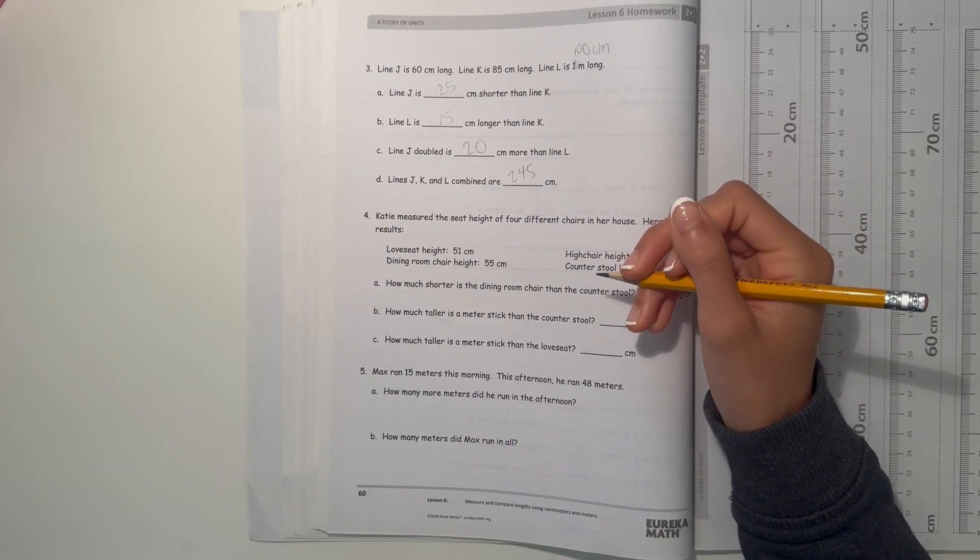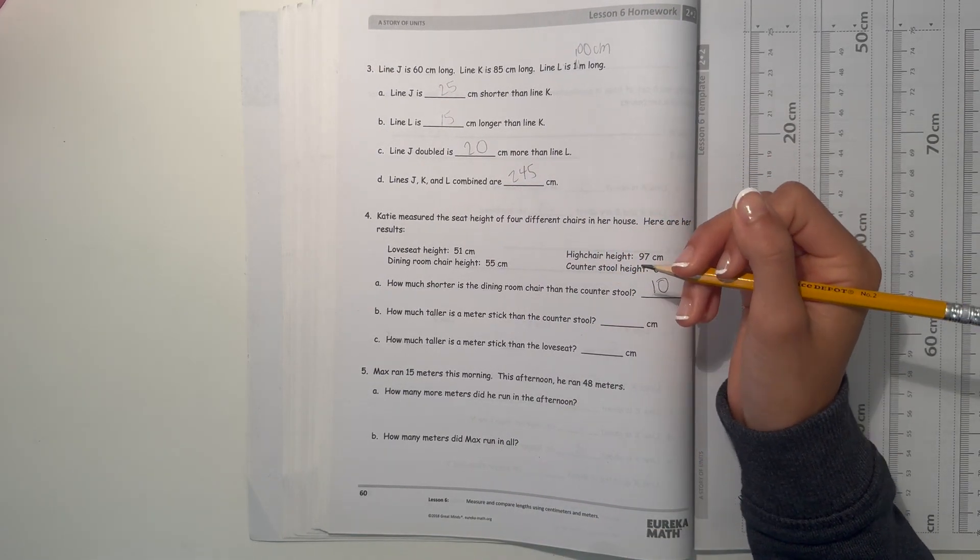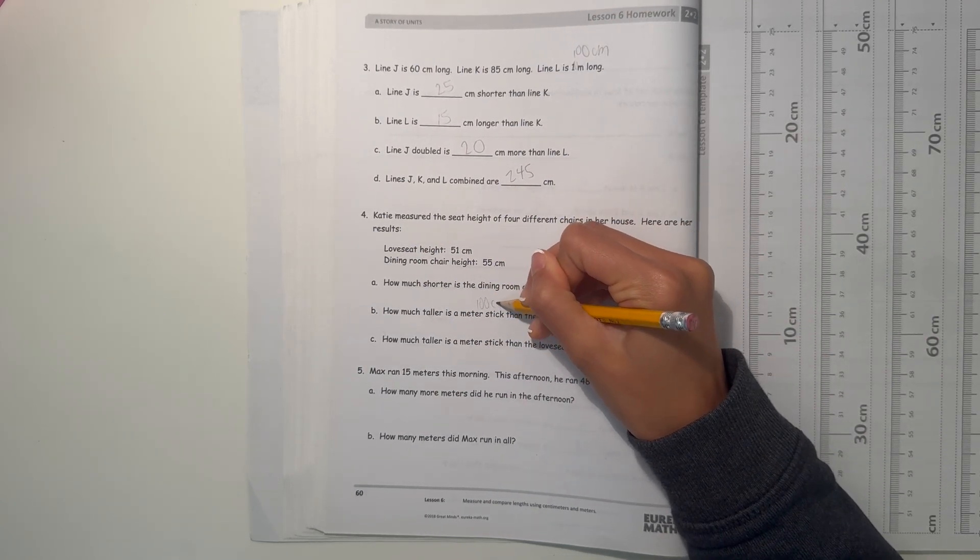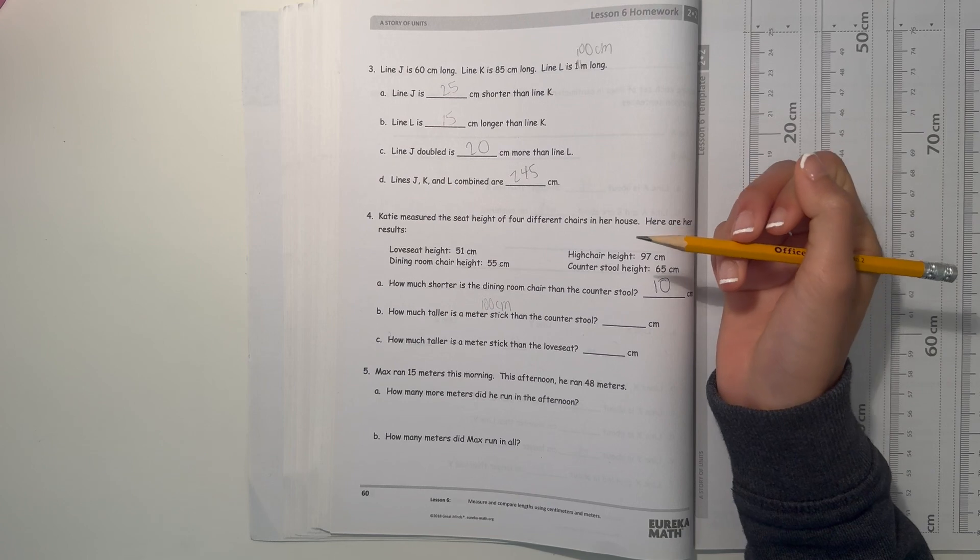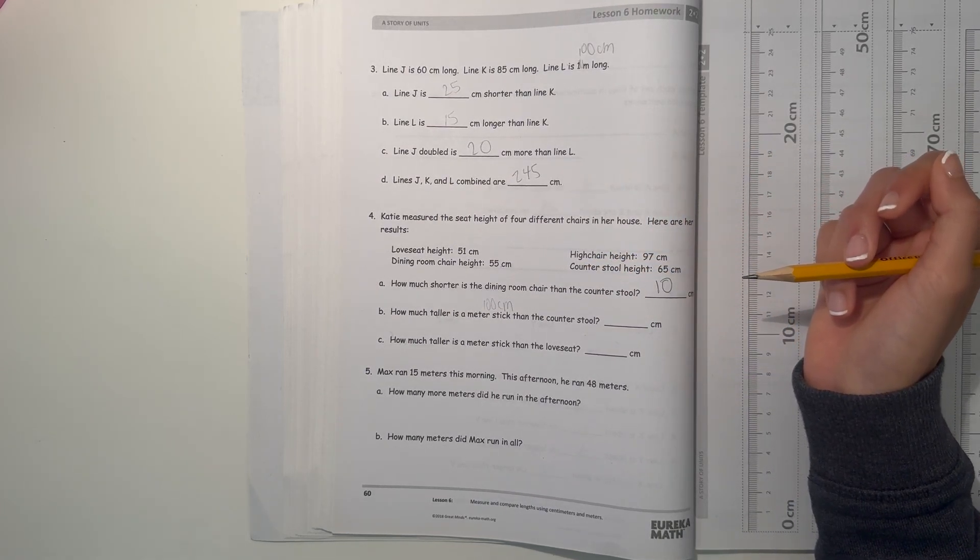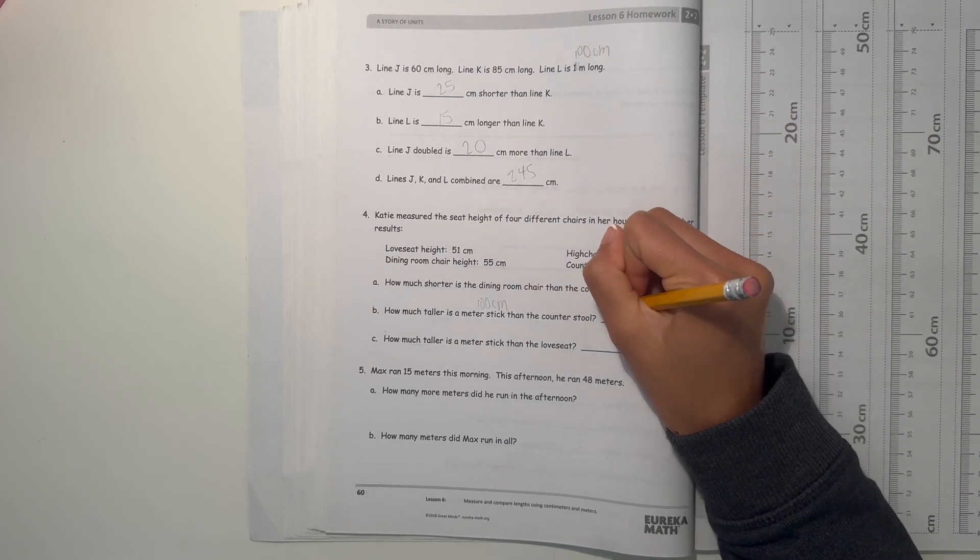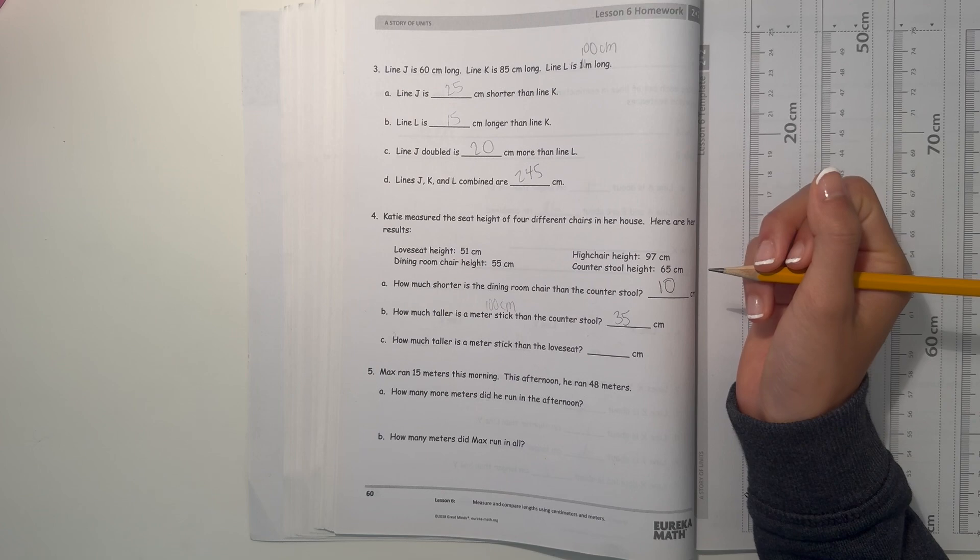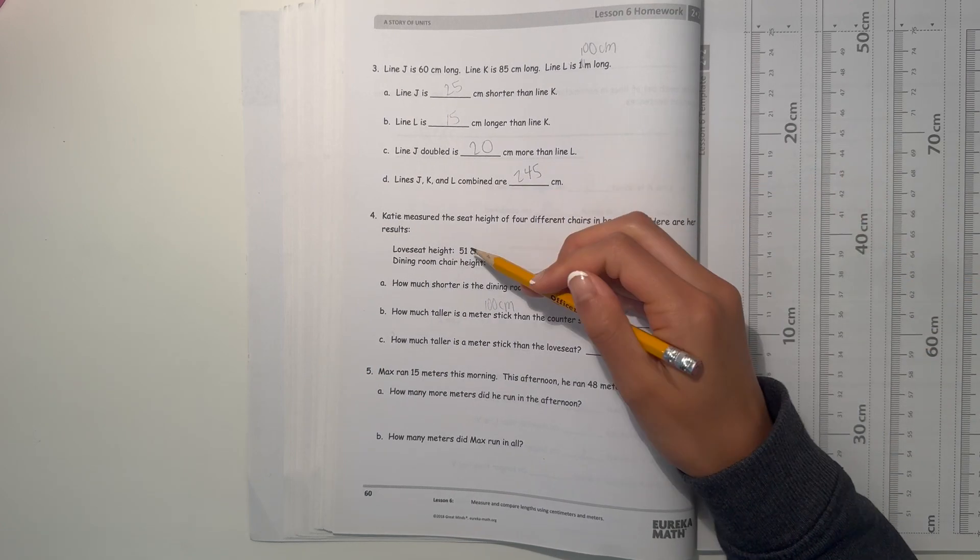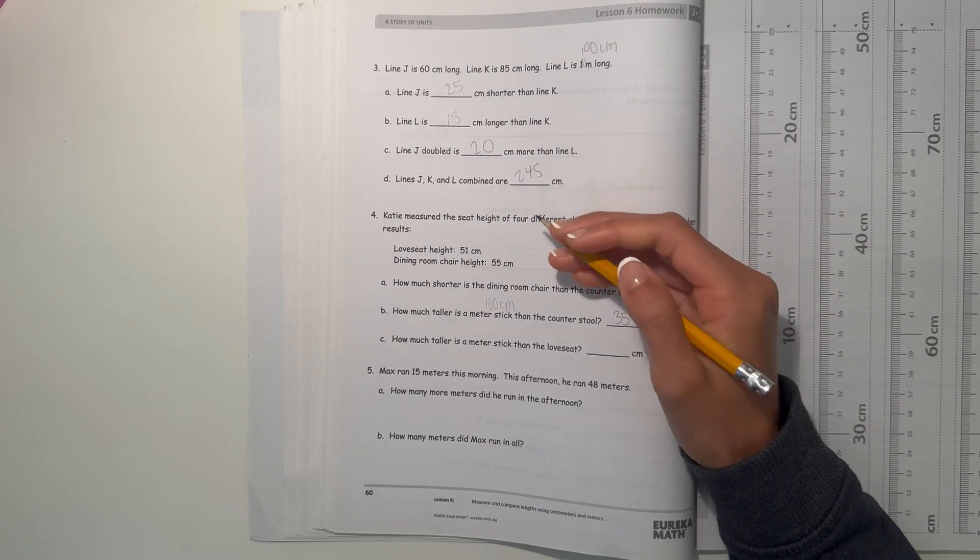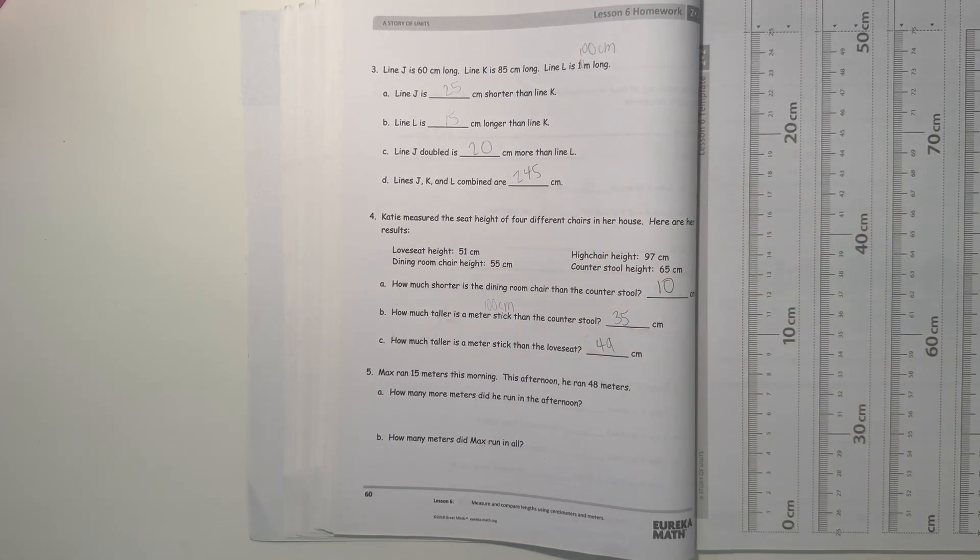Now this is how much taller is a meter stick than the counterstool? So a meter stick, one meter is 100 centimeters. So we can write that there to help us. So 100 centimeters minus 65, that would give us 35. So it's 35 centimeters taller. And a meter stick and a love seat. So that's the love seat. 100 minus 51, that's 49. So it's 49 centimeters taller.